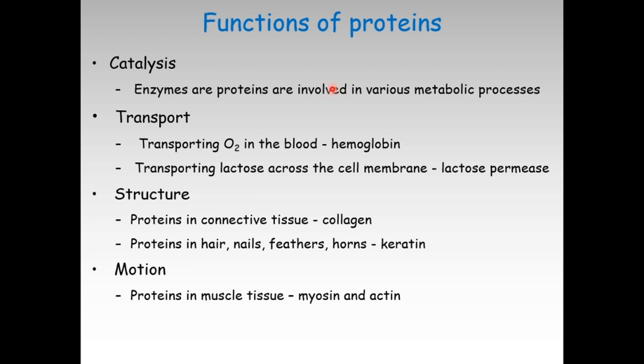Proteins are the most abundant biological macromolecules occurring in all cells and all parts of cells. Some of the functions of proteins are listed here: catalysis is a crucial function—enzymes are proteins involved in various metabolic processes. Transport: transporting oxygen in the blood is performed by hemoglobin; transporting lactose across the cell membrane by lactose permease. Structure: collagen is involved in connective tissue; keratin is involved in hair, nails, feathers, and horns. Motion: in muscle cells, myosin and actin are proteins involved in muscle tissue.